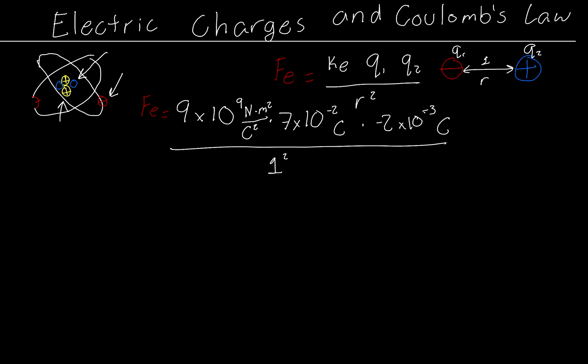Now, what we need to do here is basically just solve so that we can get the net force. So I'm just going to rewrite the problem here. We have 9 times 10 to the 9th Newtons times meters squared over Coulombs squared times 7 times 10 to the negative 2 Coulombs times negative 2 times 10 to the negative 3 Coulombs over 1 meter.